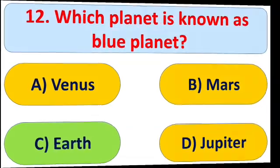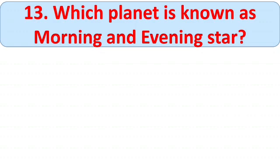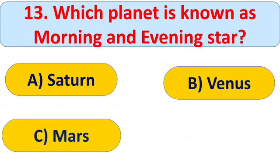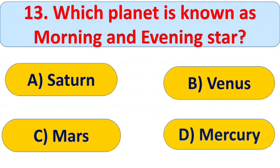Next question: which planet is known as the morning and evening star? Options: A) Saturn, B) Venus, C) Mars, and D) Mercury. You can pause the video and think about the answer. The right answer is Venus. Venus is the planet known as the morning and evening star, and it is the hottest planet in our solar system, even hotter than Mercury.